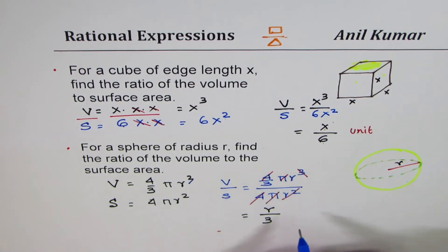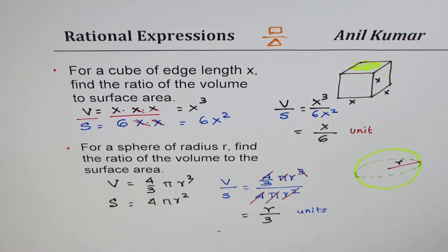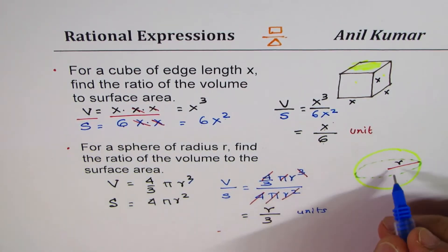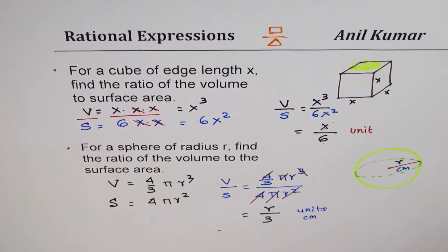If the units were given, it should be in the units of units. When I say units, any unit. For example, if I say r is in centimeters, then this unit will be in centimeters. That's what I mean when I write unit.